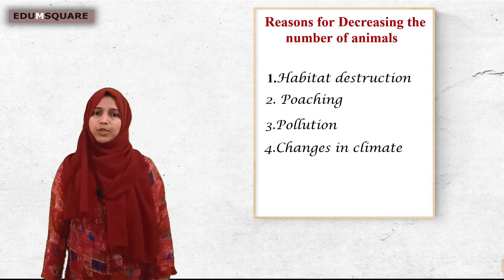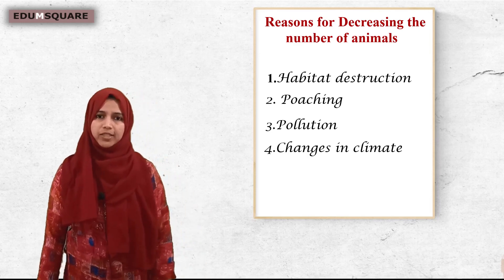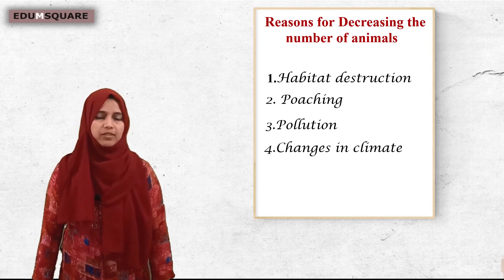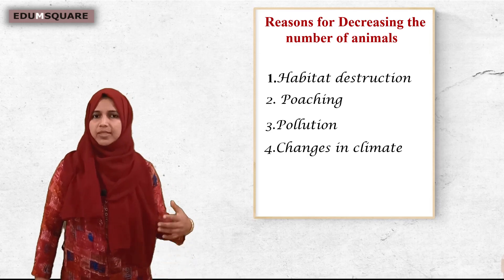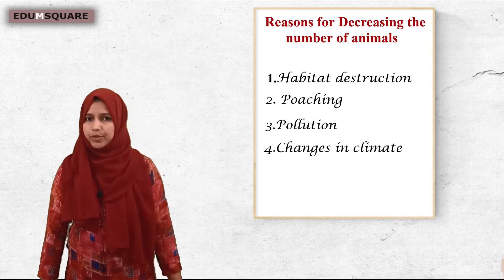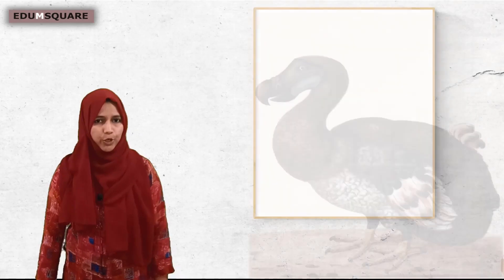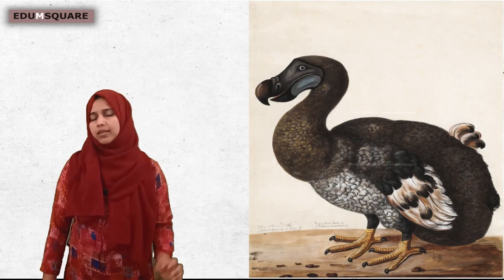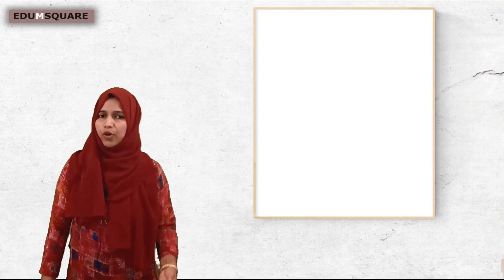It is our duty to protect the animals, because these animals are very helpful for us — they are directly or indirectly helping us. If we don't protect them, the number of animals may decrease until they become extinct from the earth. Many many years ago, dinosaurs and dodo birds lived here. Can you see these animals now? No, because they disappeared from the earth. Now we can see these animals only in films, photos, or books.